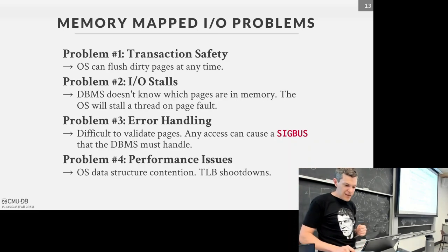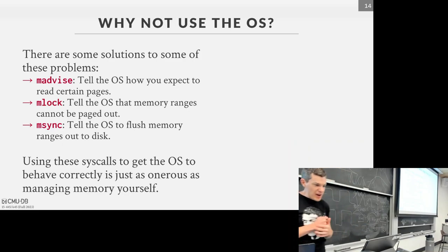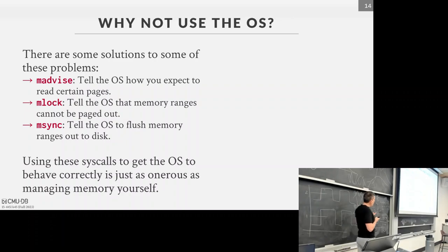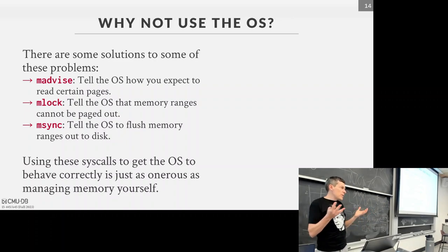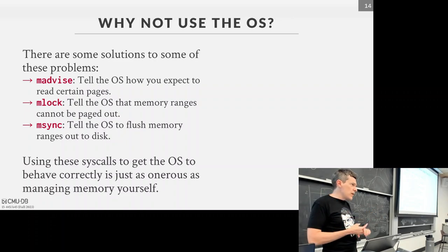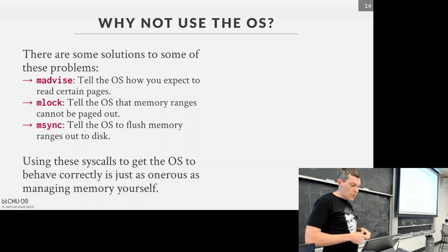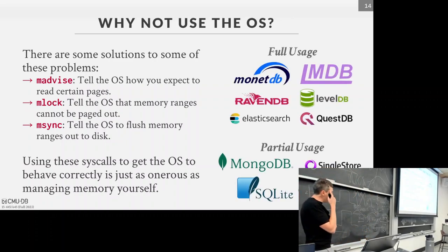Suffice to say: mmap is a bad idea. Don't do it. The reason I bring this up is that we invite many database companies and startups to give talks at CMU, and surprisingly many mention they're using mmap. When we ask why, they say it's quick and easy. When we talk to them a few years later, they say it was a huge mistake. Here's a listing of systems that use mmap: at the top are full users — Elastic, MonetDB out of CWI. The LMDB developer is basically my opposite — he says always use mmap and has been banned from database mailing lists for constantly pushing it. He's wrong.